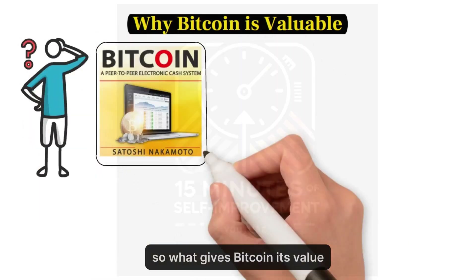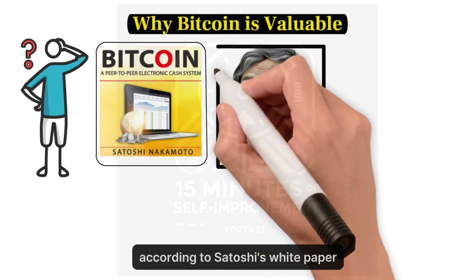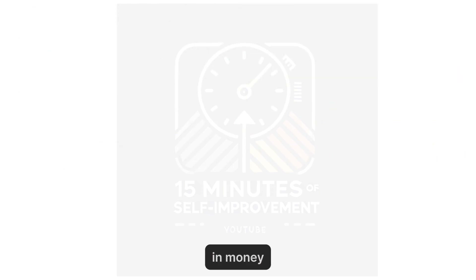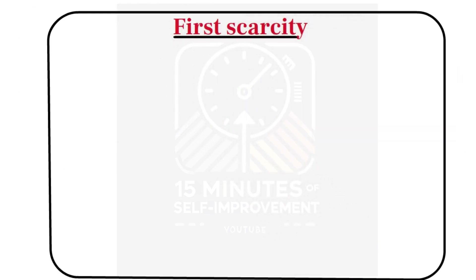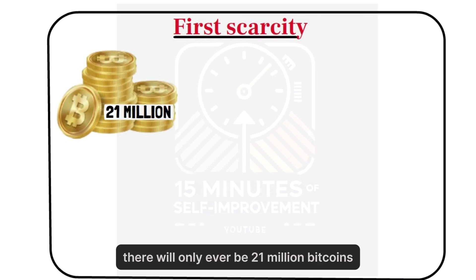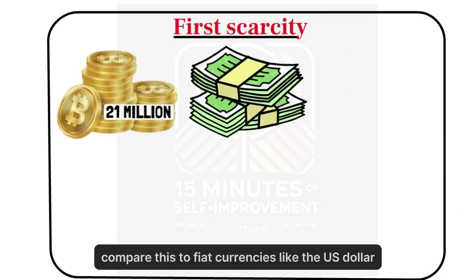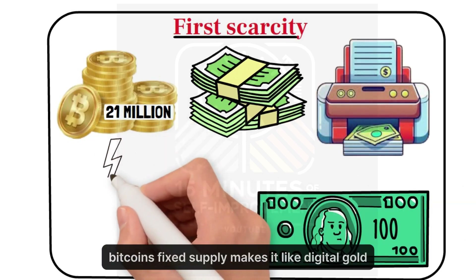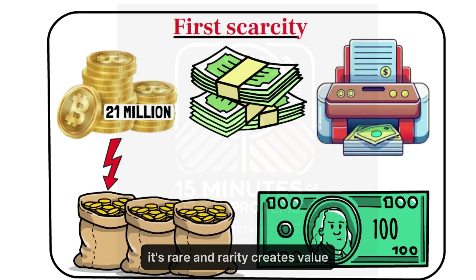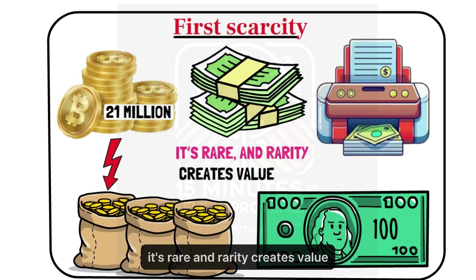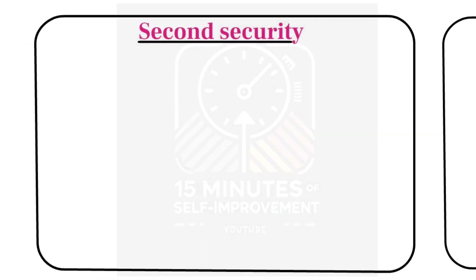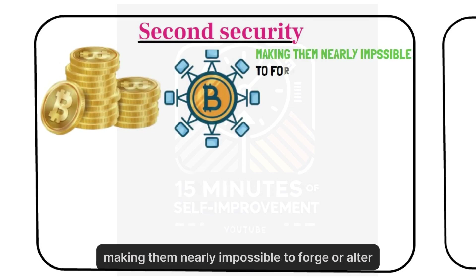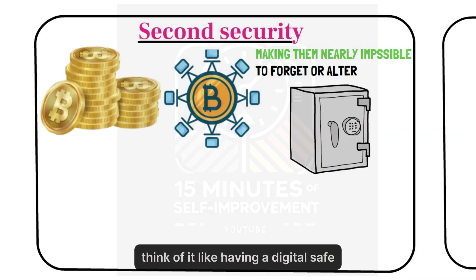So what gives Bitcoin its value? According to Satoshi's white paper, Bitcoin's design addresses several key factors that create value in money. First, scarcity — there will only ever be 21 million Bitcoins. Compare this to fiat currencies like the US dollar, which governments can print endlessly. Bitcoin's fixed supply makes it like digital gold: it's rare, and rarity creates value. Second, security — Bitcoin transactions are secured by the blockchain, making them nearly impossible to forge or alter. Think of it like having a digital safe that only you can open.